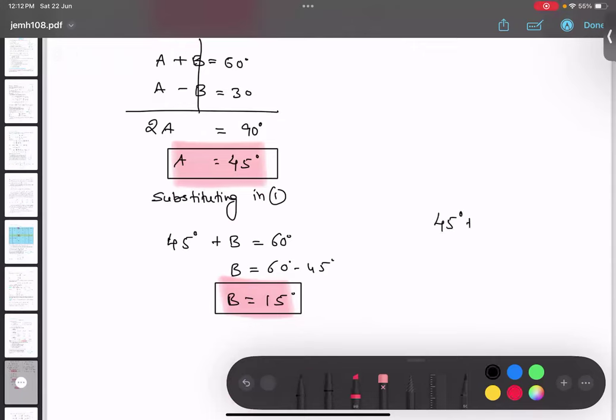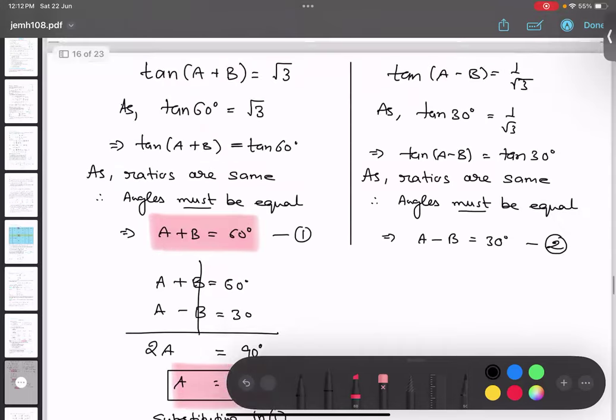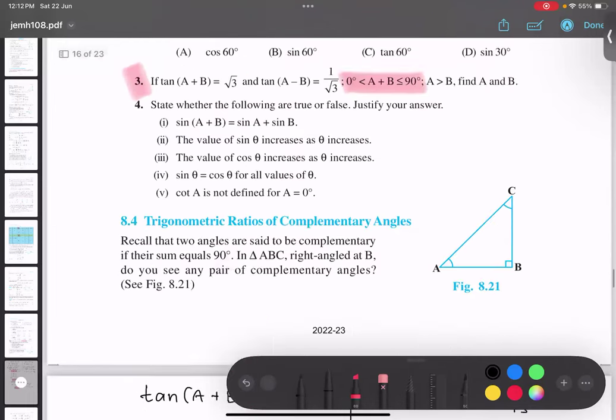45 plus 15 is what? 60, isn't it? 60 is between 0 degree and 90 degree, yes or no? So both the conditions are correct, hence my answer is correct.